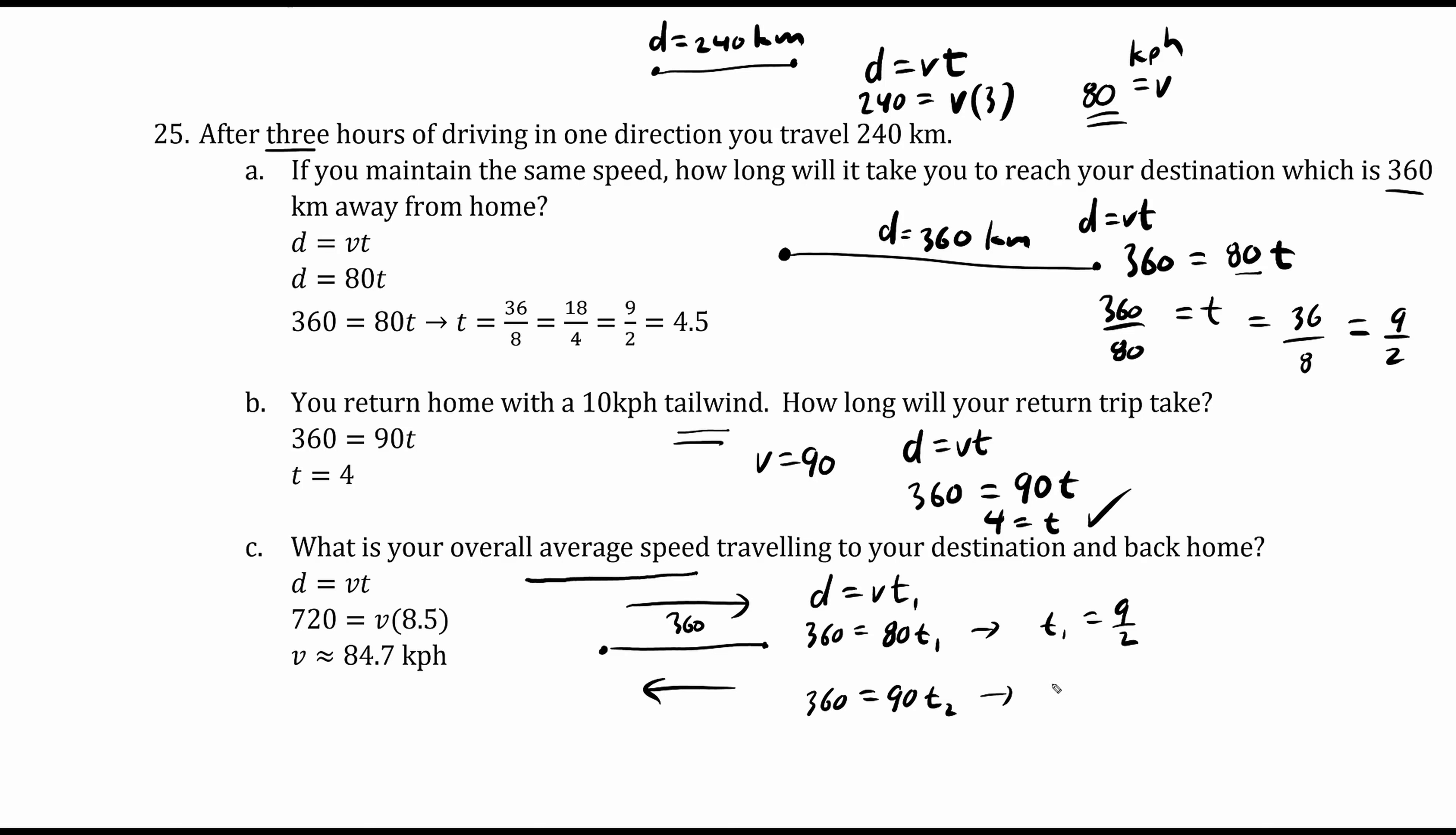The total time is these numbers added: 9 over 2 plus 4 is 17 over 2, in other words 8.5. Dividing both sides by 8.5, we have the average velocity approximately 84.7 kilometers an hour.